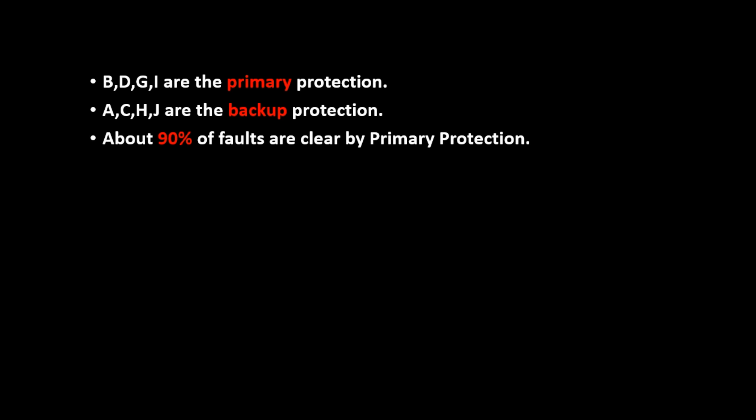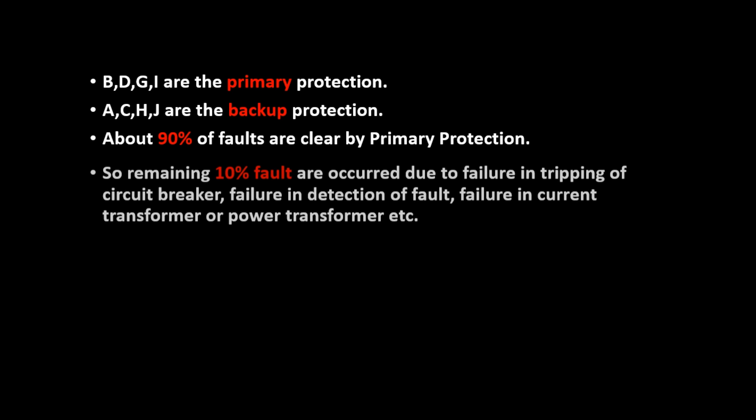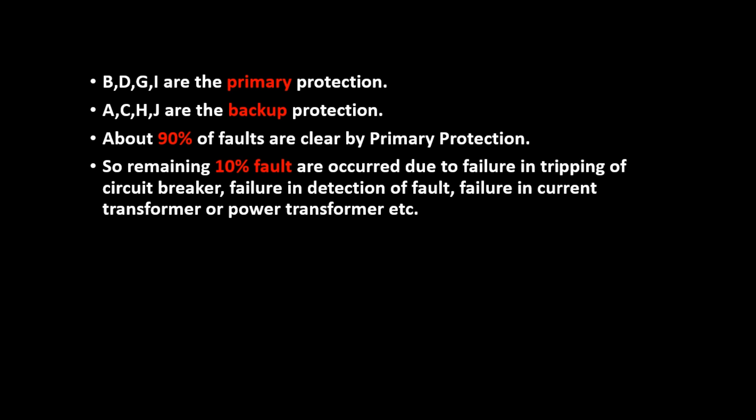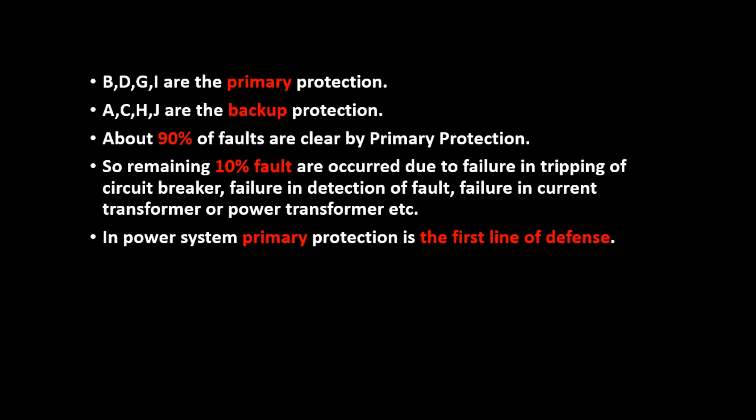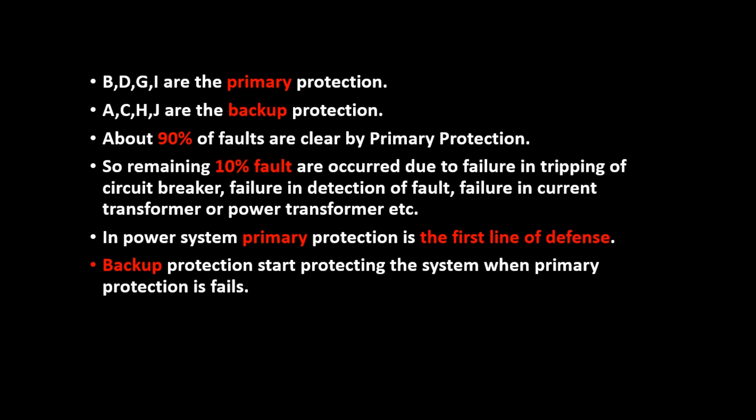About 90% of faults are cleared by primary protection. The remaining 10% of faults occur due to failure in tripping of circuit breaker, failure in detection of fault, or failure in current transformer or power transformer. In a power system, primary protection is the first line of defense. Backup protection starts protecting the system when primary protection fails, clearing that remaining 10% of faults.